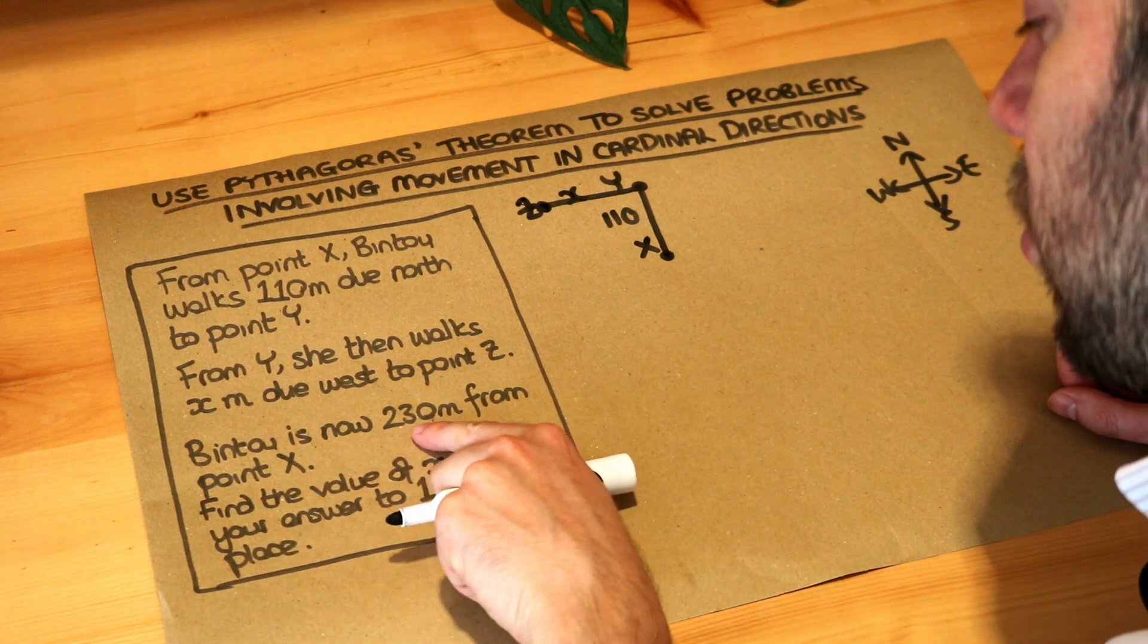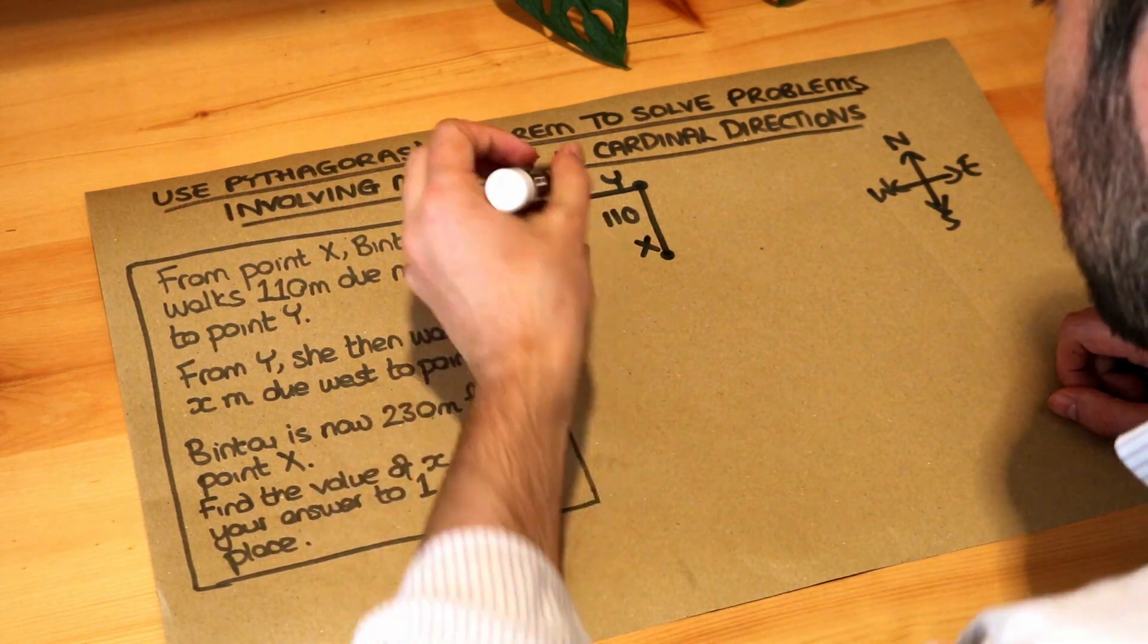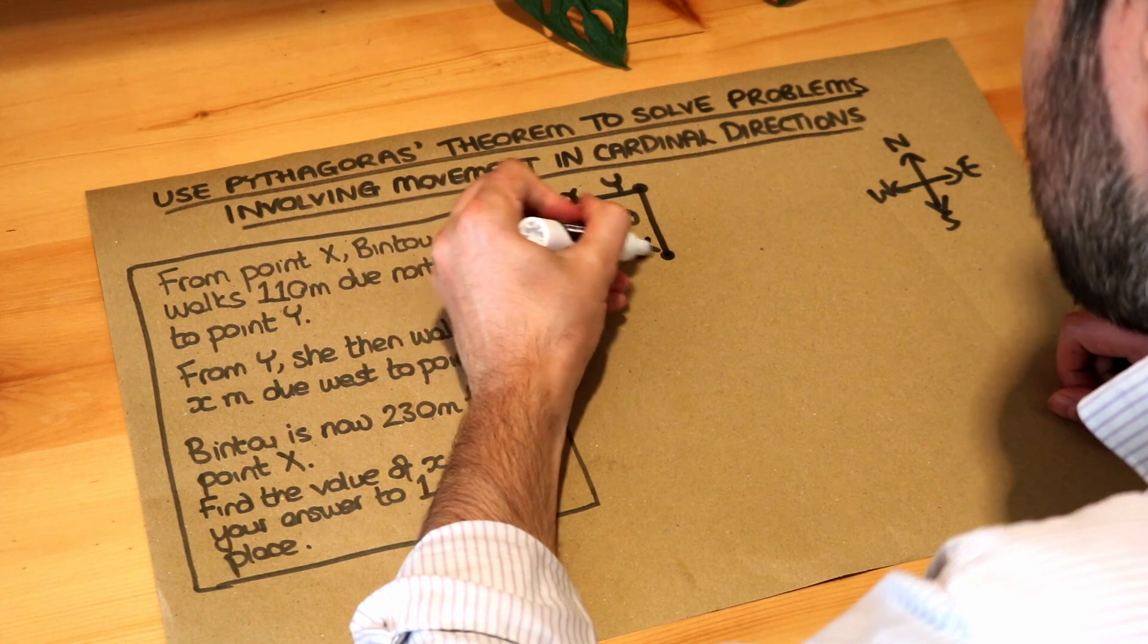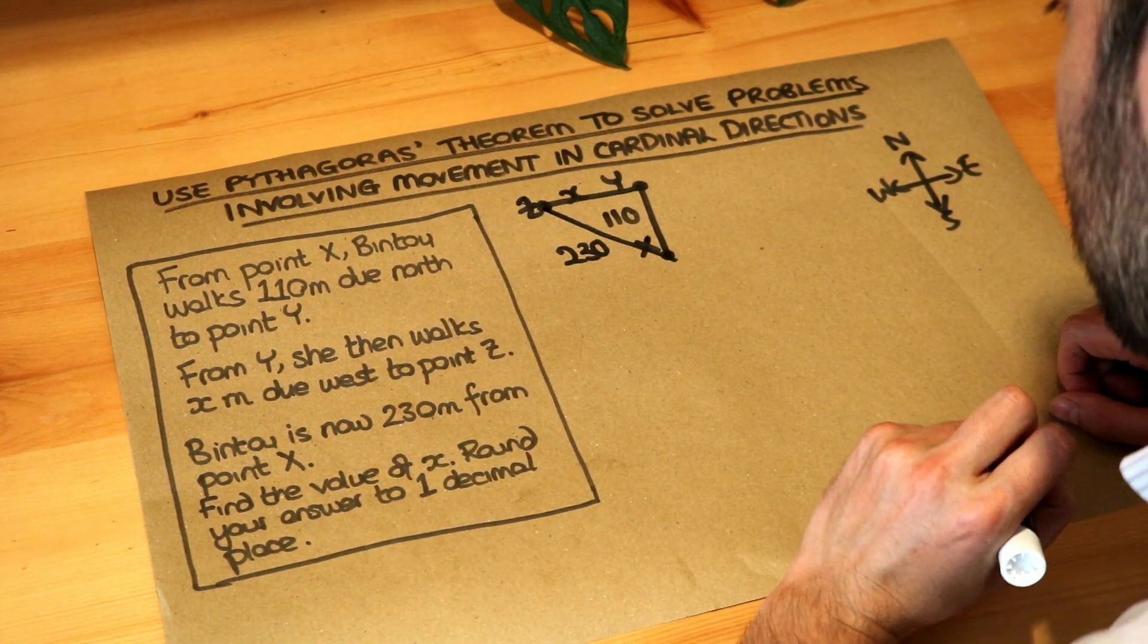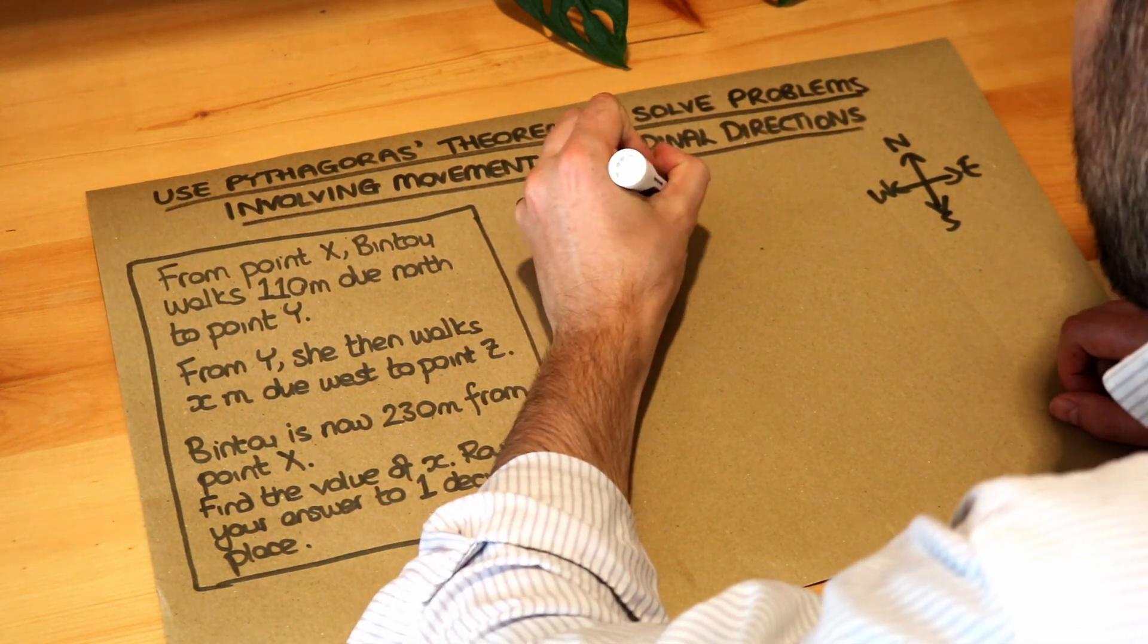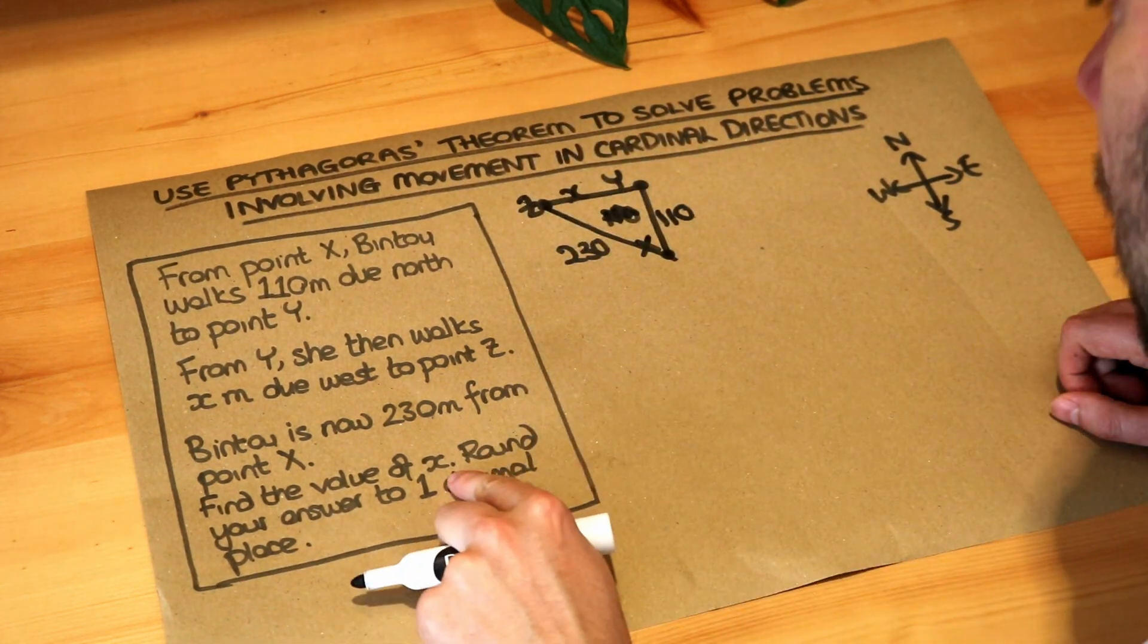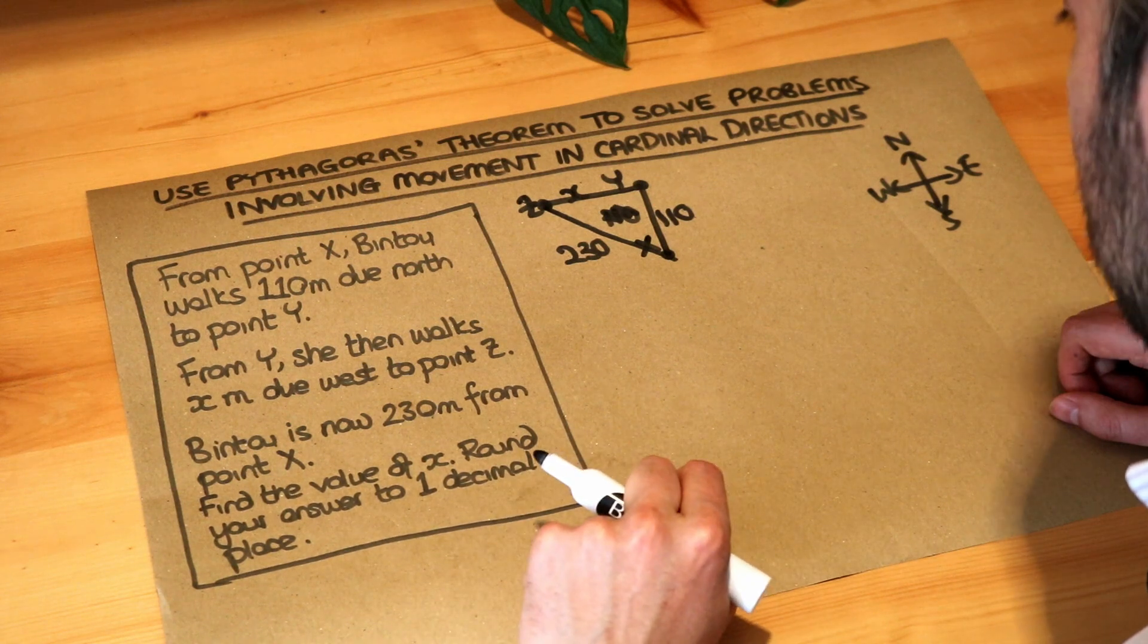So we're told Bintu is now 230 meters from point X. So this point Z is 230 meters from point X. I'm just going to move that 110 here just so it's a bit clearer. Find the value of x rounding your answer to one decimal place.